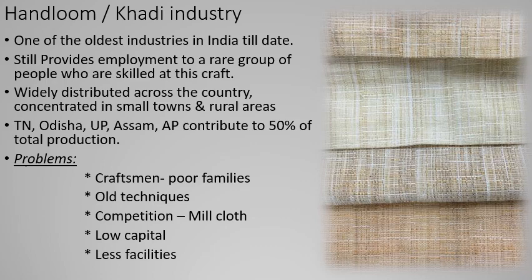Old techniques take so much time — one cloth takes very long to produce. There is huge competition with power loom and mill cloth: a mill cloth industry can produce a thousand clothes in one day while khadi can produce only ten to a hundred. Low capital is another problem — workers from poor families must sell at higher rates, so few people buy. Lack of facilities and poor working environments further hinder the industry.